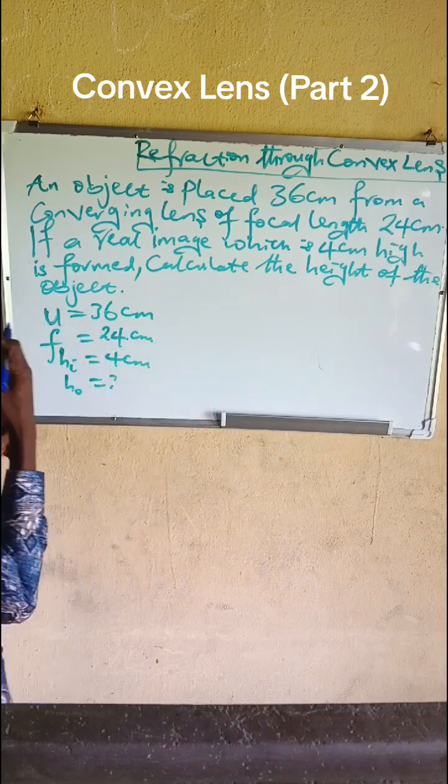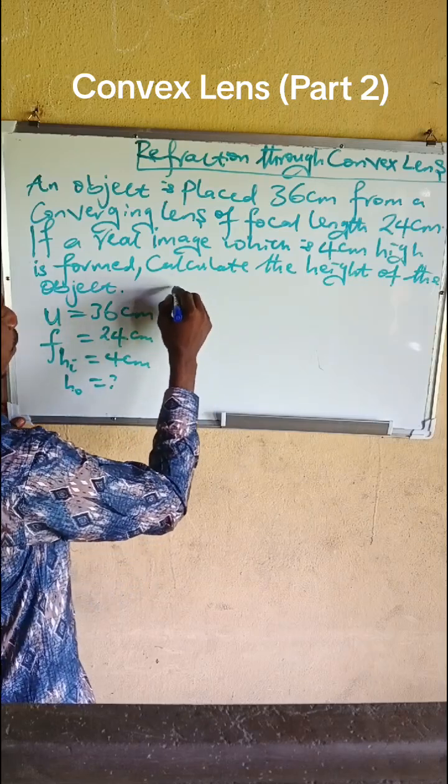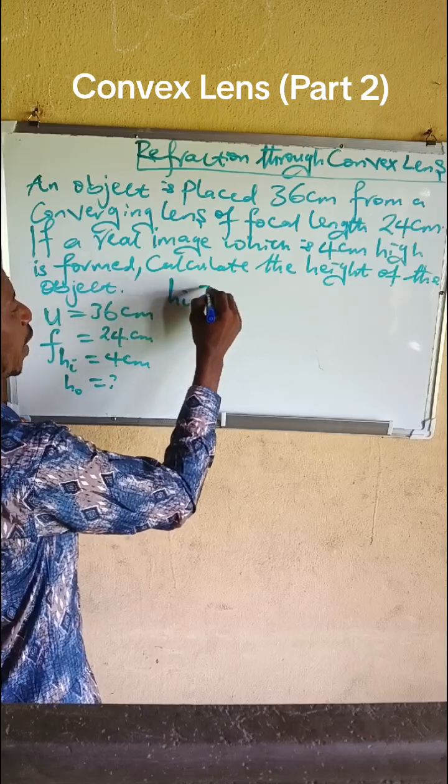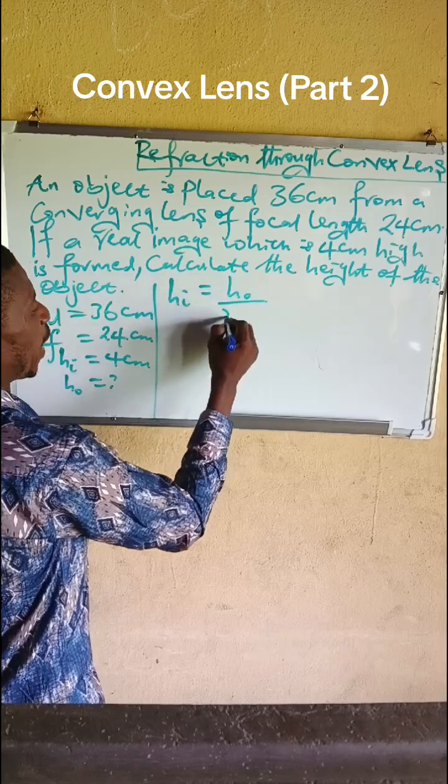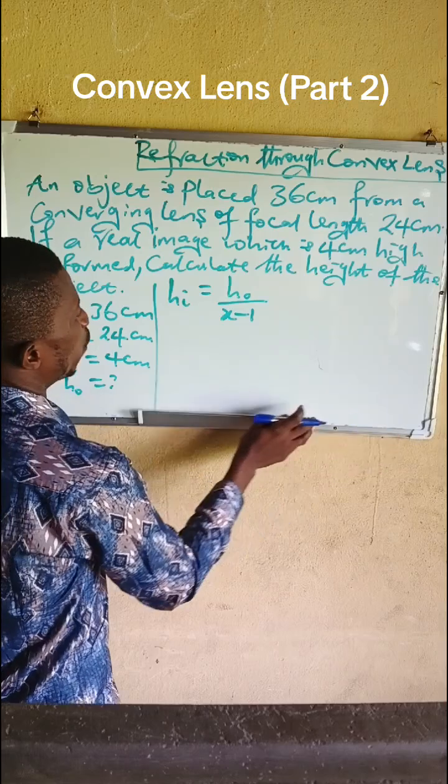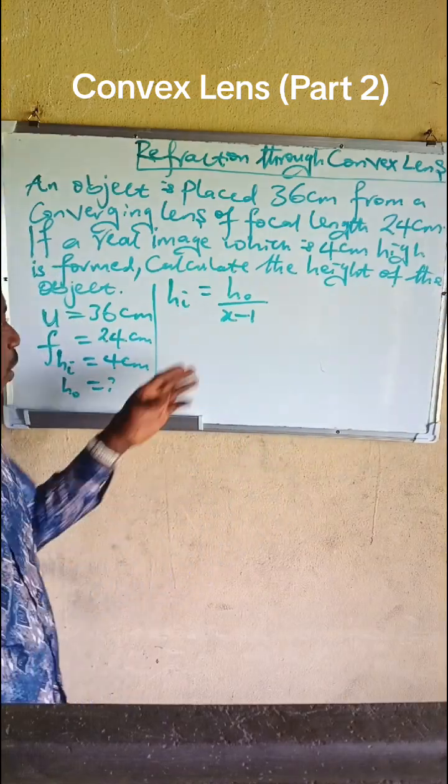We use this formula: image height / object height = x - 1. This formula is very important and it will solve this problem.